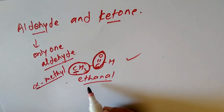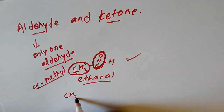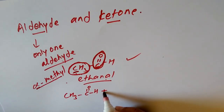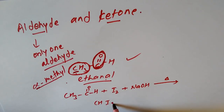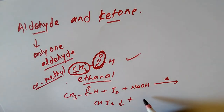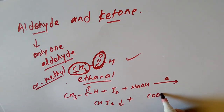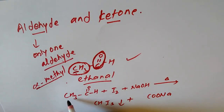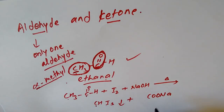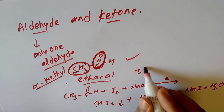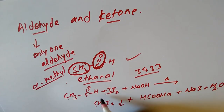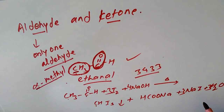The Iodoform test reaction for acetaldehyde: CH3CHO reacts with I2 plus NaOH to give CHI3 plus HCOONa (sodium methanoate/sodium formate) plus NaI plus H2O. Acetaldehyde has two carbons, so the sodium salt has one carbon — sodium methanoate. The balancing coefficients are 3, 4, 3, 3.